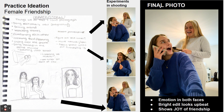Use those keywords to show you experimented — 'I experimented,' 'final photo.' This would be a great place to throw in a couple of other things emphasizing 2D design skills, emphasizing materials and process and synthesis for the idea. Something like 'bright edit looks upbeat' — so the why behind what you did. Sometimes having a shift in the background color can help too.